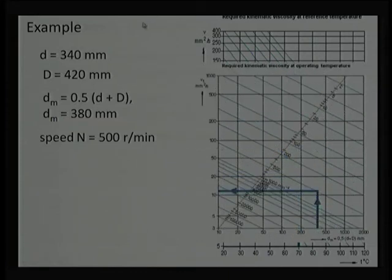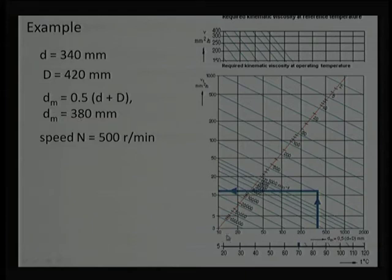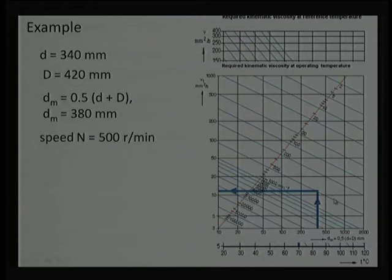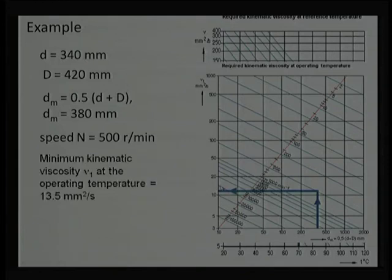Let us take an example. Assume bore diameter d = 340 mm and OD = 420 mm, so mean diameter d_m = 380 mm. Operating speed is 500 rpm. Drawing a vertical line at 380 mm on the chart and intersecting the 500 rpm line, then drawing a horizontal line, gives a desirable viscosity of 13.5 mm²/s (centistokes). This is the desirable viscosity at operating temperature.